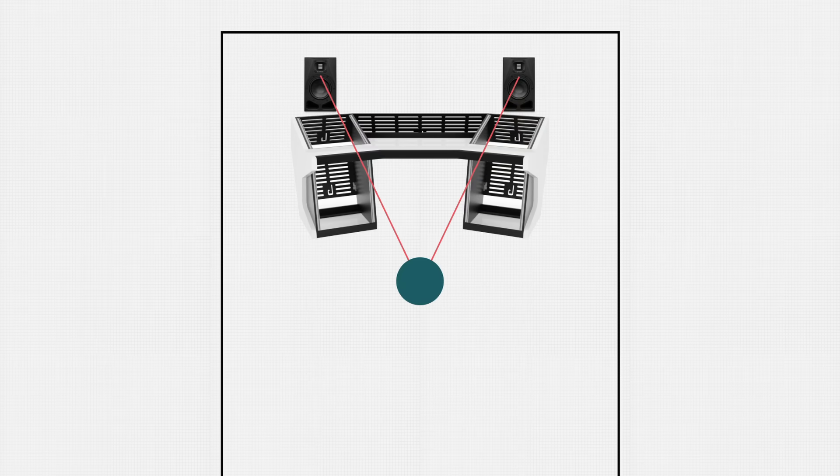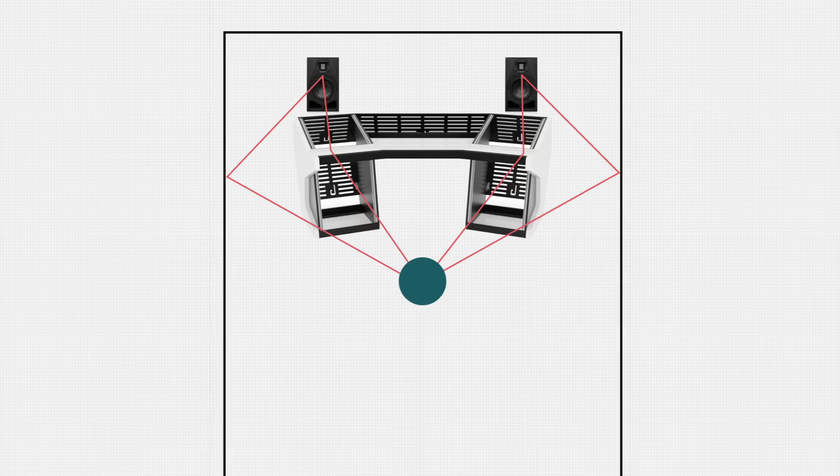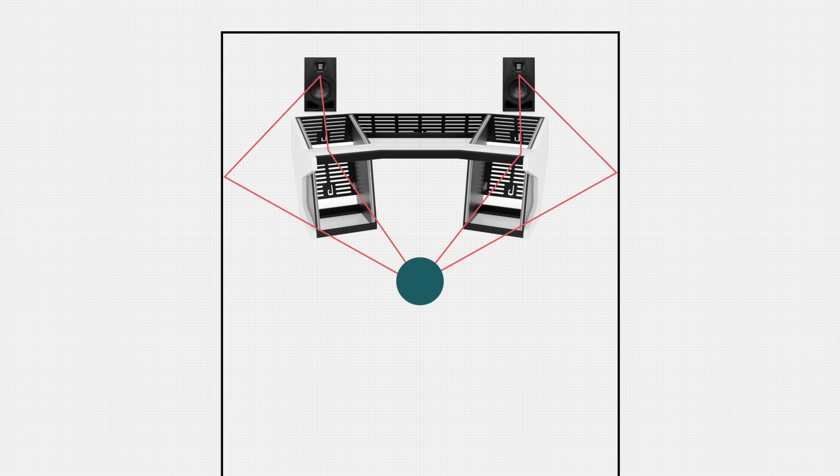The first thing I'd recommend addressing with your acoustic treatment plan is the problem of early reflections. When sound comes out of your speakers, some will go directly to the listening position — this is direct sound. Some will reflect off of walls, floors, and ceilings before reaching the listening position — this is indirect sound. Early reflections are the indirect sounds that take the shortest pathway from the speaker to the listener.